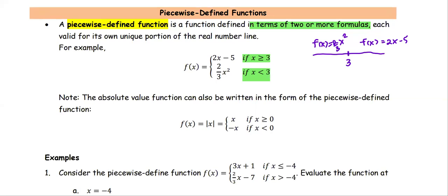Note that the absolute value function is also defined in the form of a piecewise function. It breaks up at x equals 0. For positive x, the absolute value of x is the same as x. For x less than 0, the absolute value of x is the opposite of the negative, which is the positive value.